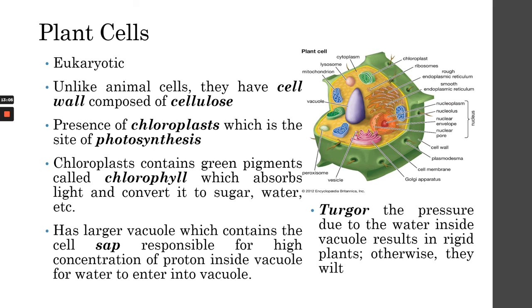Those are some distinguishing features of plant cells compared to animal cells, which we discussed in lesson 2 as another type of eukaryotic cell. That's our lesson for today — short but informative. If you have any questions, do not hesitate to contact me. Have a good day.